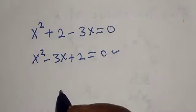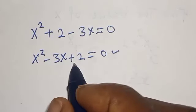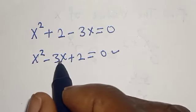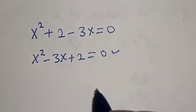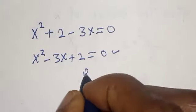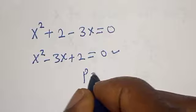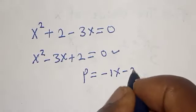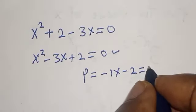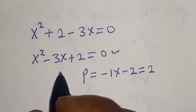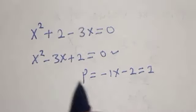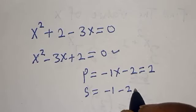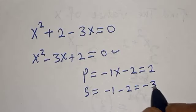Let's rearrange: s squared minus 3s plus 2 is equal to 0. This is a quadratic equation which can be solved using the factorization method. The coefficient of s here is minus 3. Let's look for the product p: minus 1 multiplied by minus 2 equals 2. The sum must equal minus 3: minus 1 plus minus 2 equals minus 3.